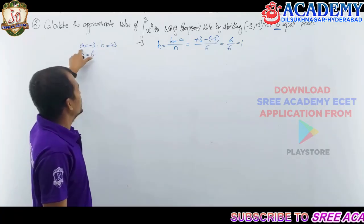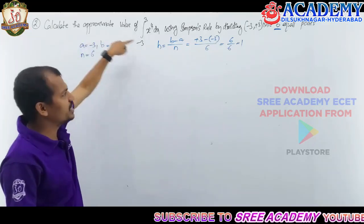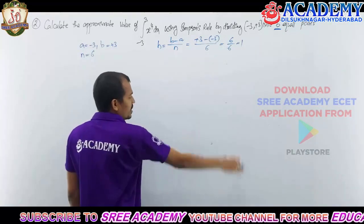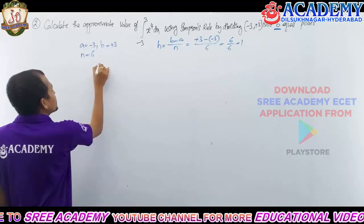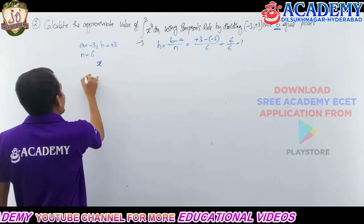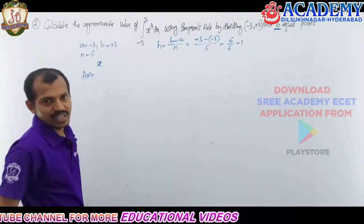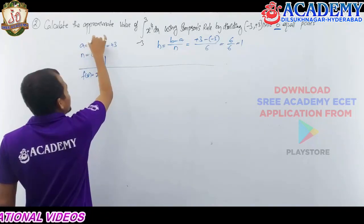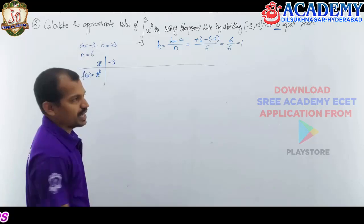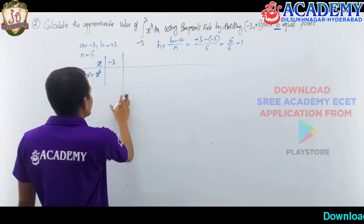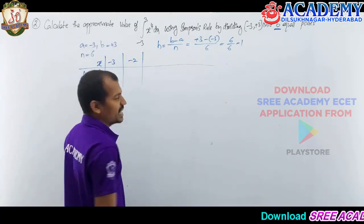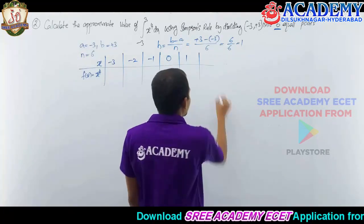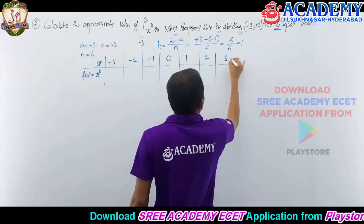Using these values, x naught equals a, and x₆ equals b equals 3. We now find the numerical values y₀ to y₆. The x values are: x₀ = minus 3, x₁ = minus 2, x₂ = minus 1, x₃ = 0, x₄ = 1, x₅ = 2, x₆ = 3, stepping by h = 1 each time.